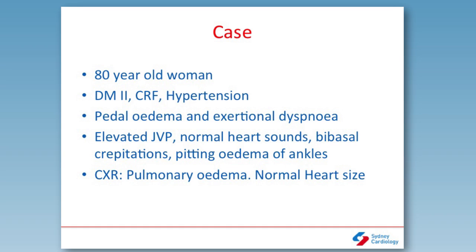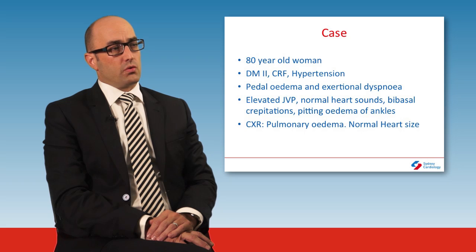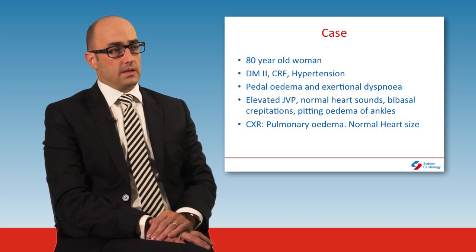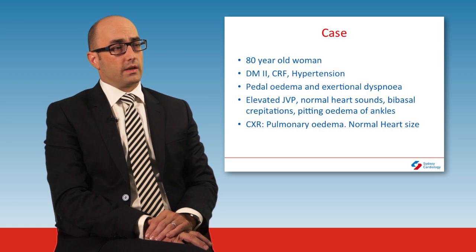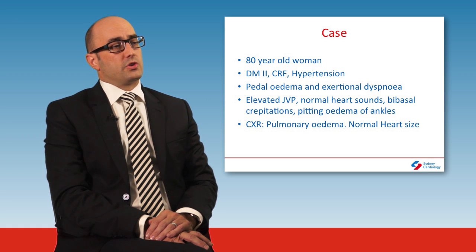We're going to start off with a case of an 80-year-old lady who has a background history of type two diabetes, chronic renal failure, and hypertension. She presents to your rooms complaining of pedal oedema and exertional dyspnoea. When you examine her you notice that she has an elevated JVP, normal heart sounds, and bibasal crepitations. She also has swelling of her ankles. You request a chest x-ray which shows pulmonary oedema but normal heart size.